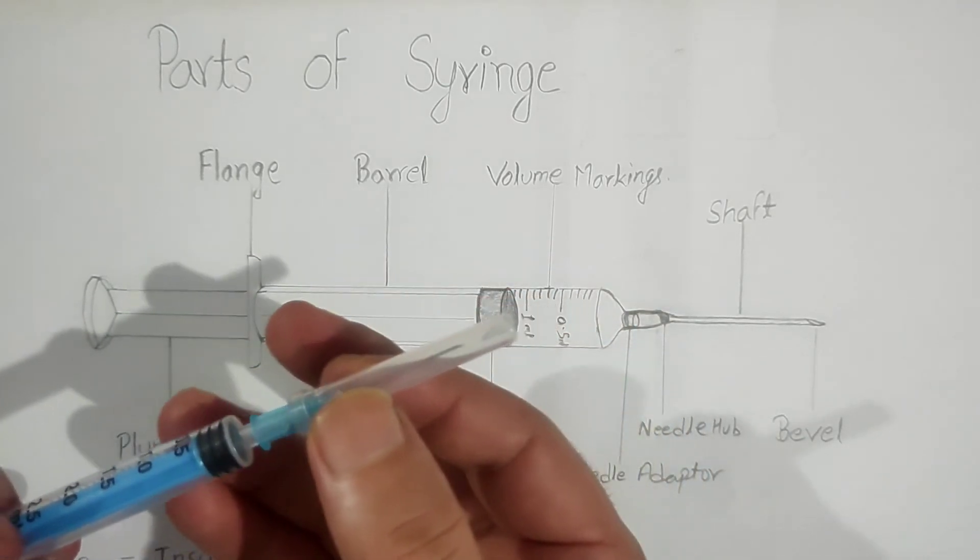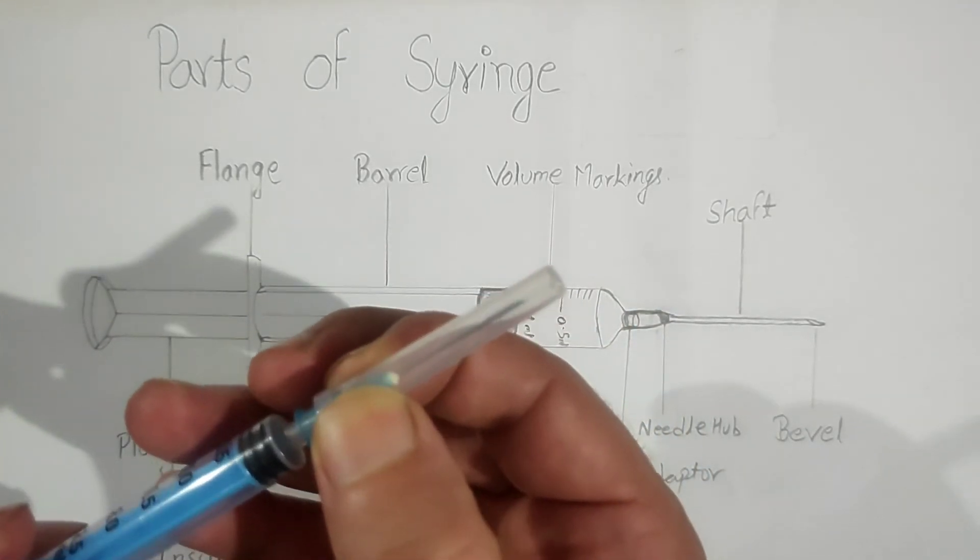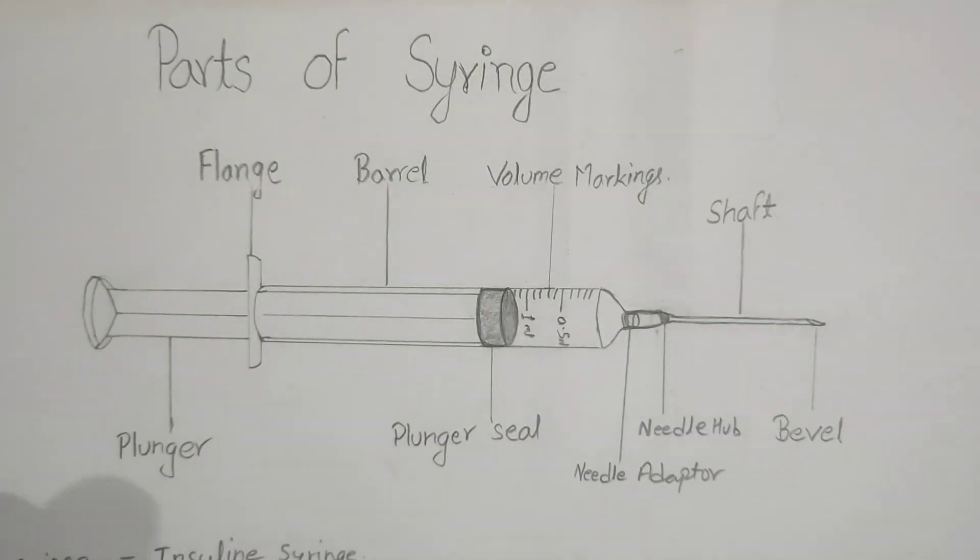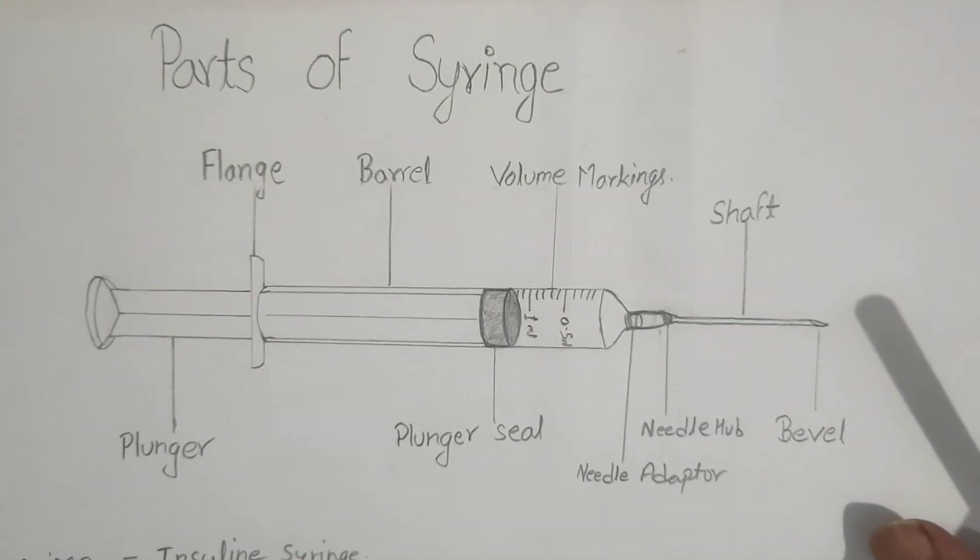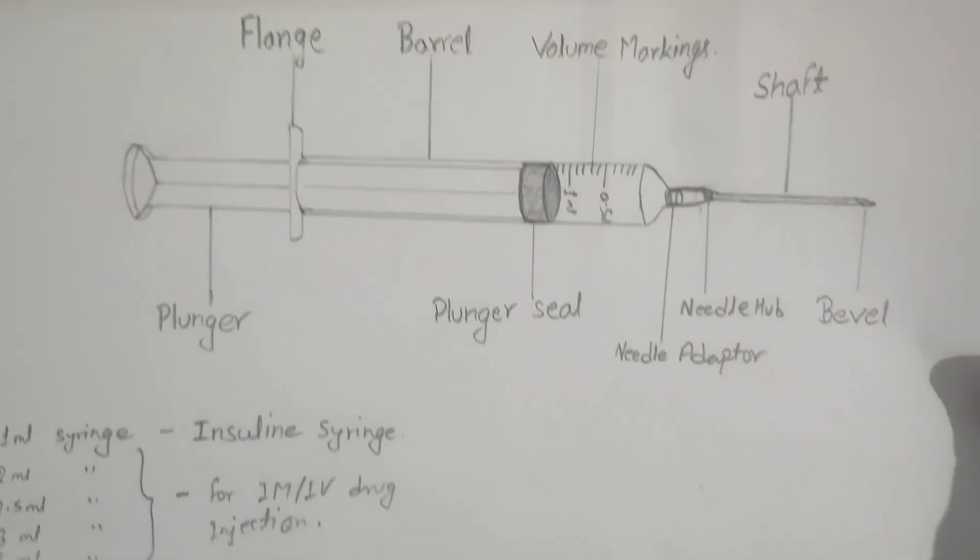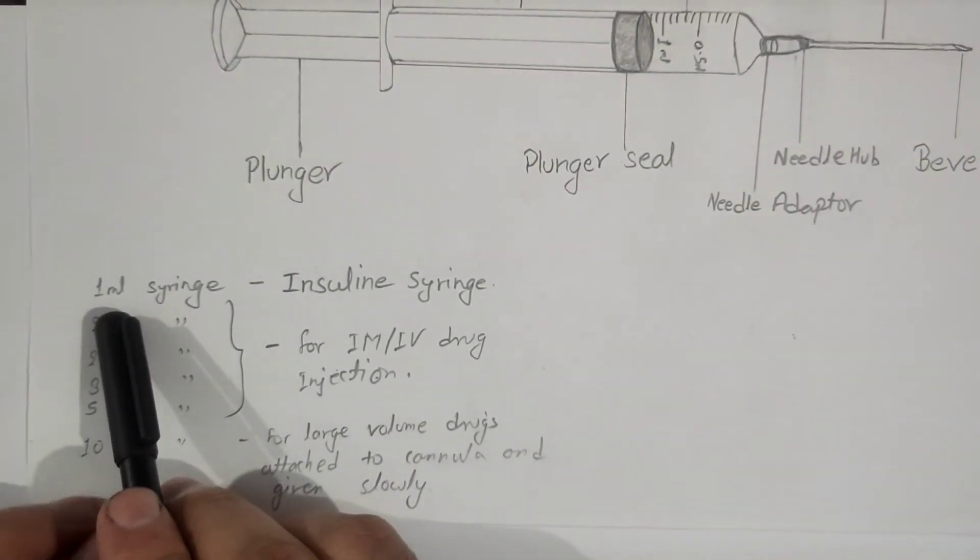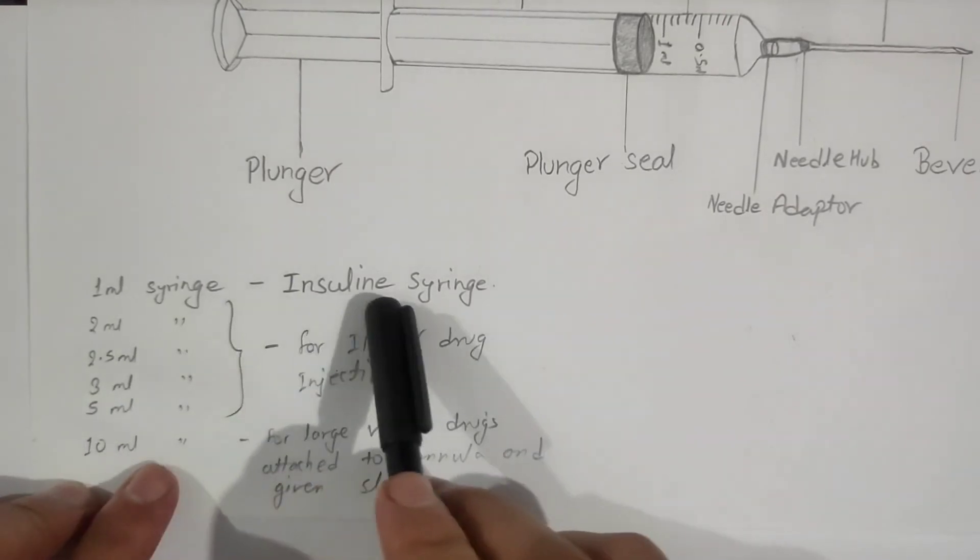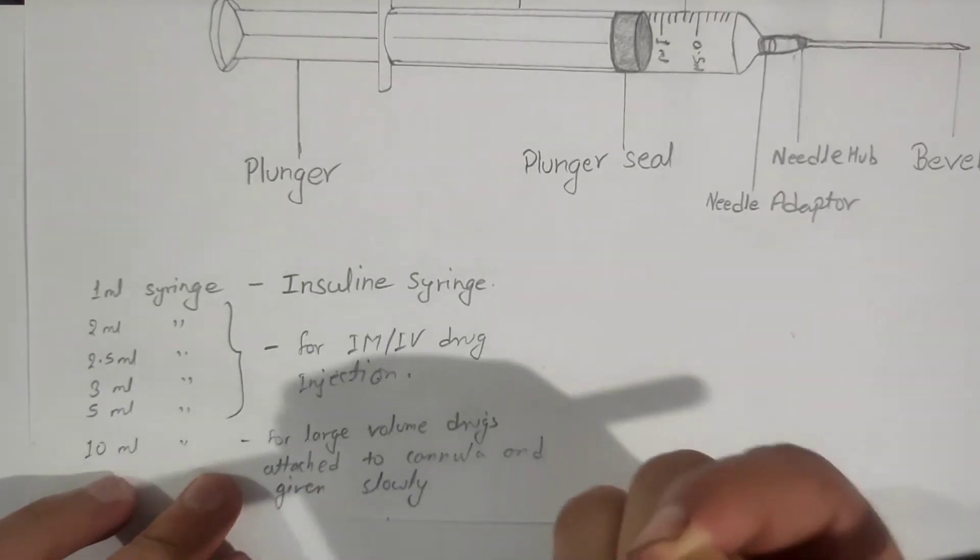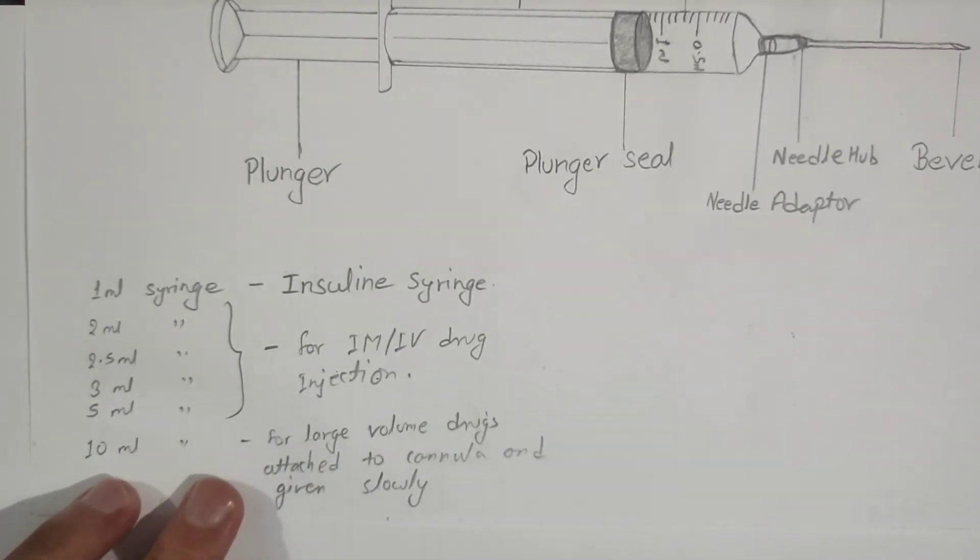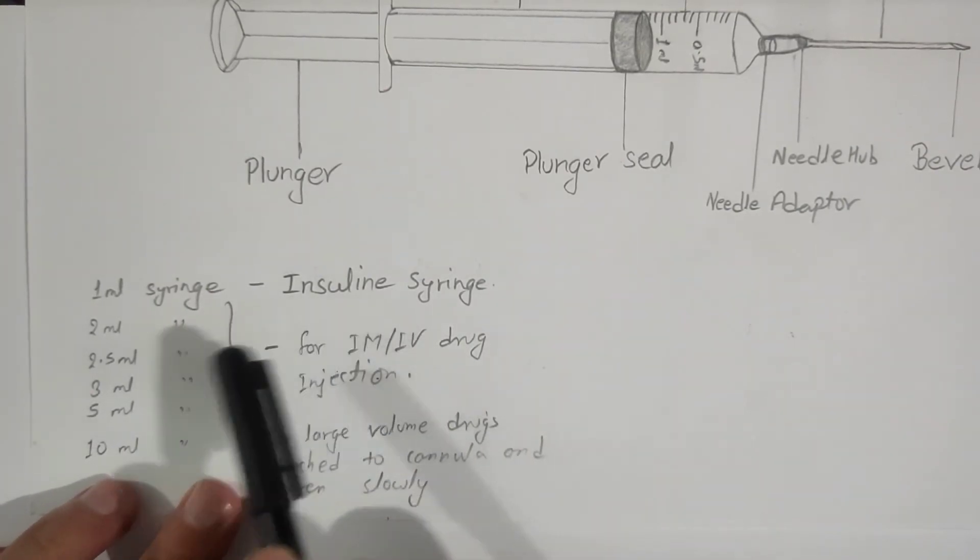to protect the needle. There are many types of syringes available in the market. The syringe which is available in 1ml is also known as the insulin syringe. It is very fine and is mainly used for the subcutaneous injection of insulin.